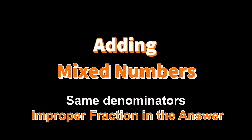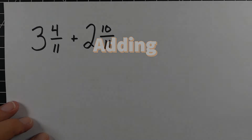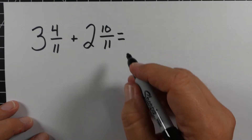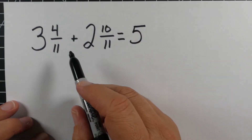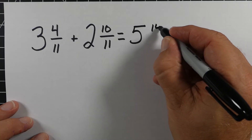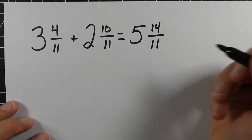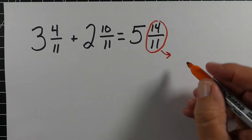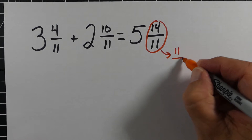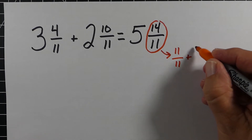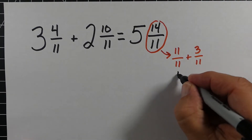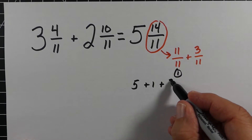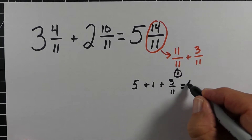Sometimes we get improper answers when adding mixed numbers with the same denominator. For 3 and 4/11 plus 2 and 10/11, the whole numbers equal 5 and the fractions equal 14/11 — the numerator is larger than the denominator. So I take the 14/11 and turn it into a mixed number: 14/11 is like 11/11 plus 3/11, which equals 1 and 3/11. Adding that to the 5, we end up with 6 and 3/11.